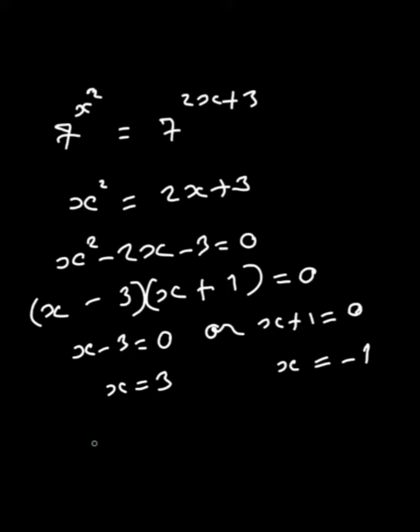Okay, on the other hand, are these 3 and negative 1 really the solutions? Then you can consider backward. If x is 3, x minus 3 will be 0. If this is 0, the product of 2 brackets will be 0.